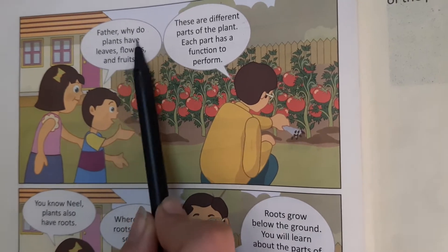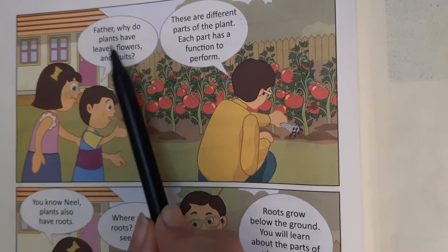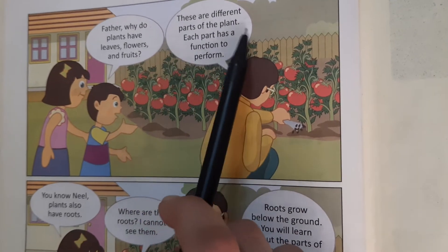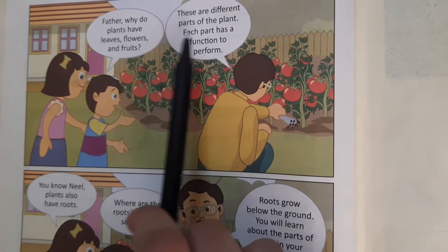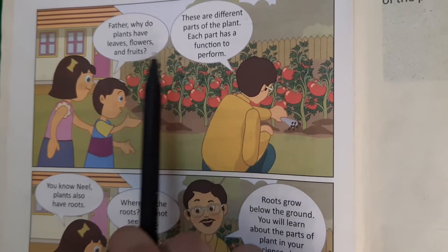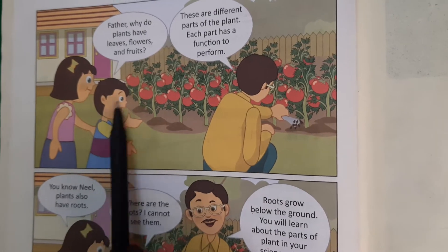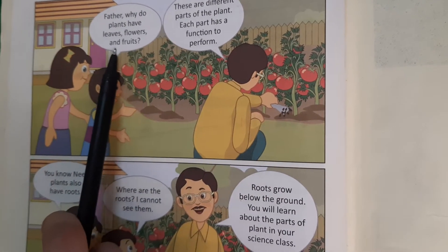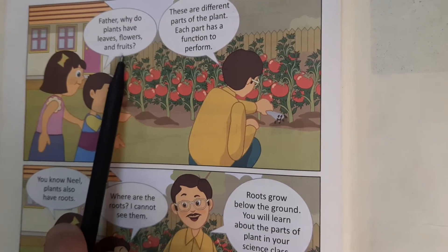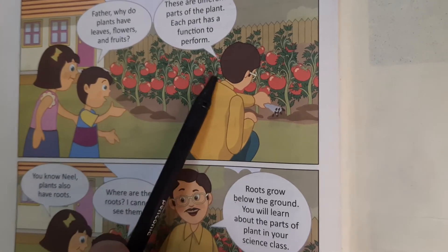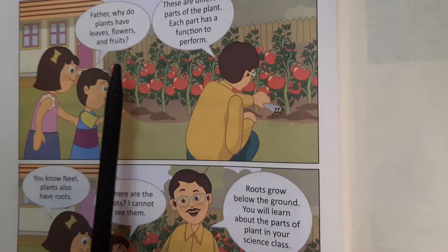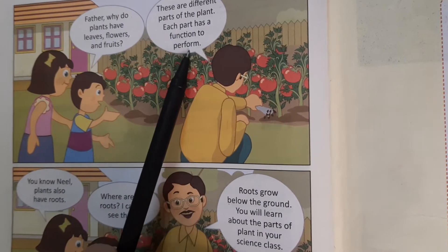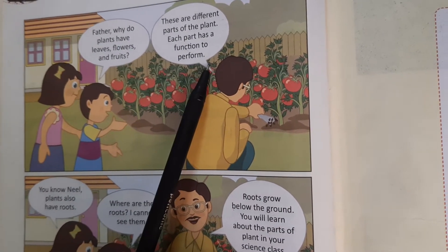Father, why do plants have leaves, flowers and fruits? These are different parts of a plant, and each part has a function to perform. So here is a child who asks his father why plants have leaves, flowers and fruits. The father answers that there are many parts of plants that each perform a particular function.